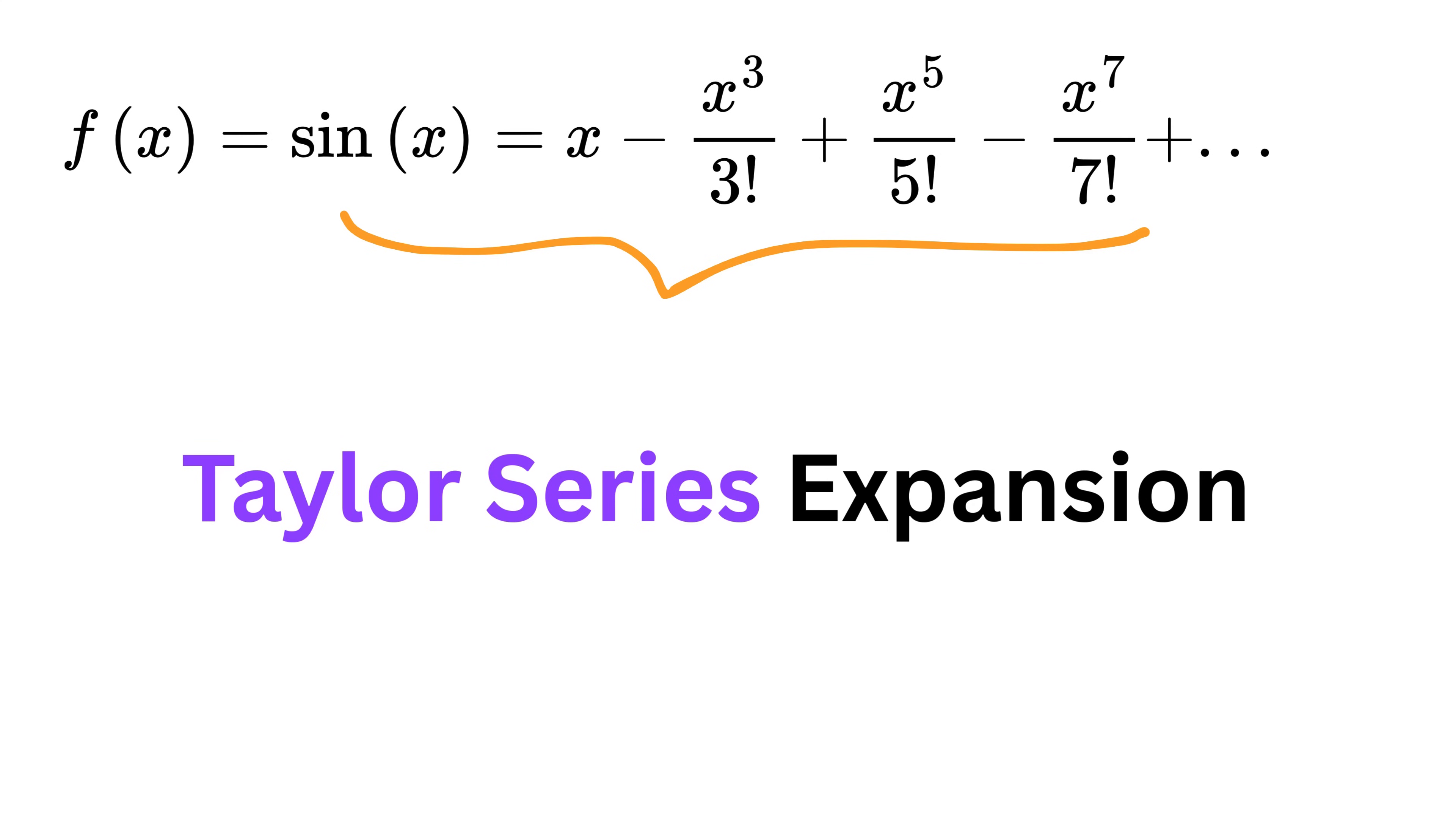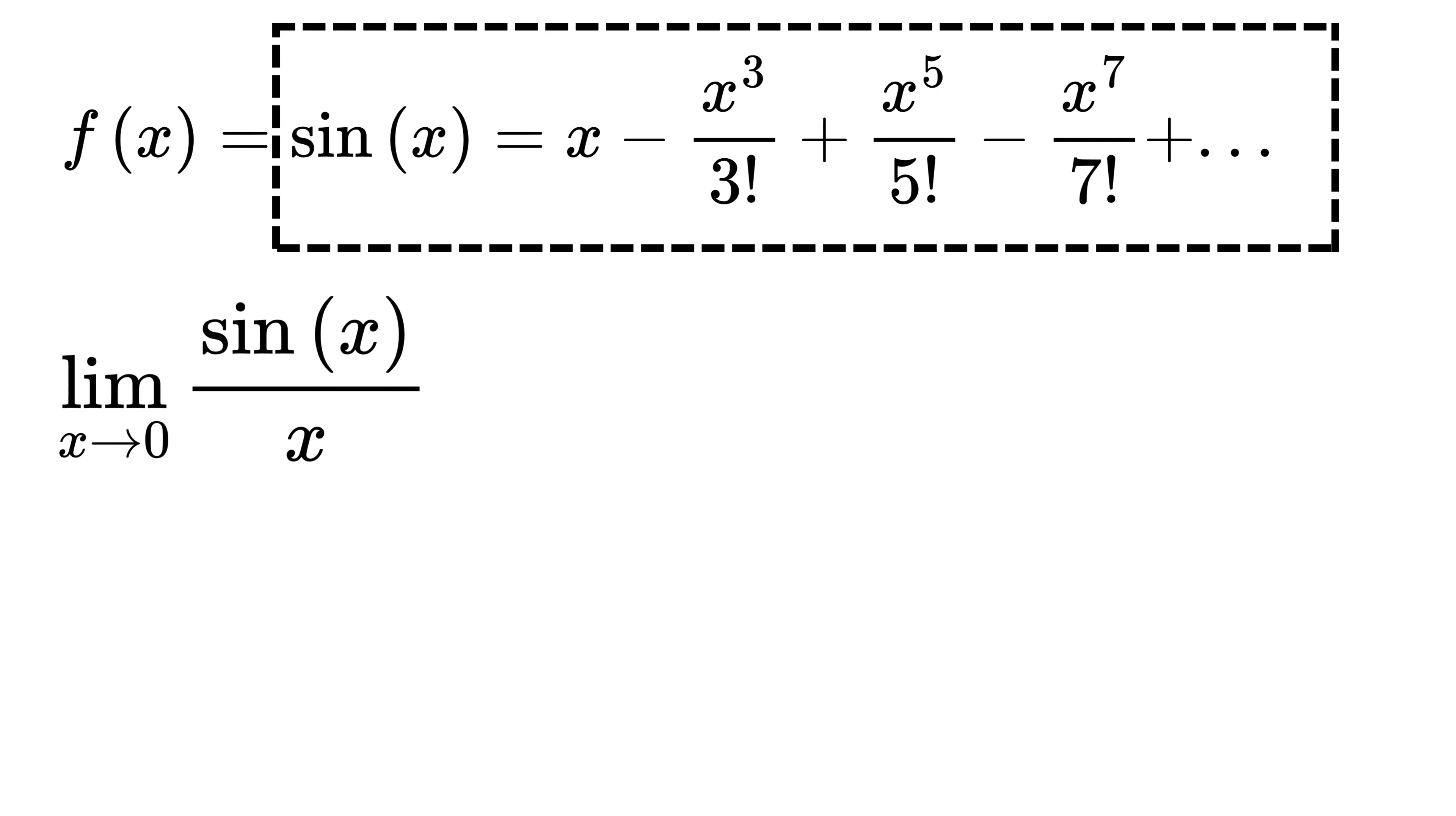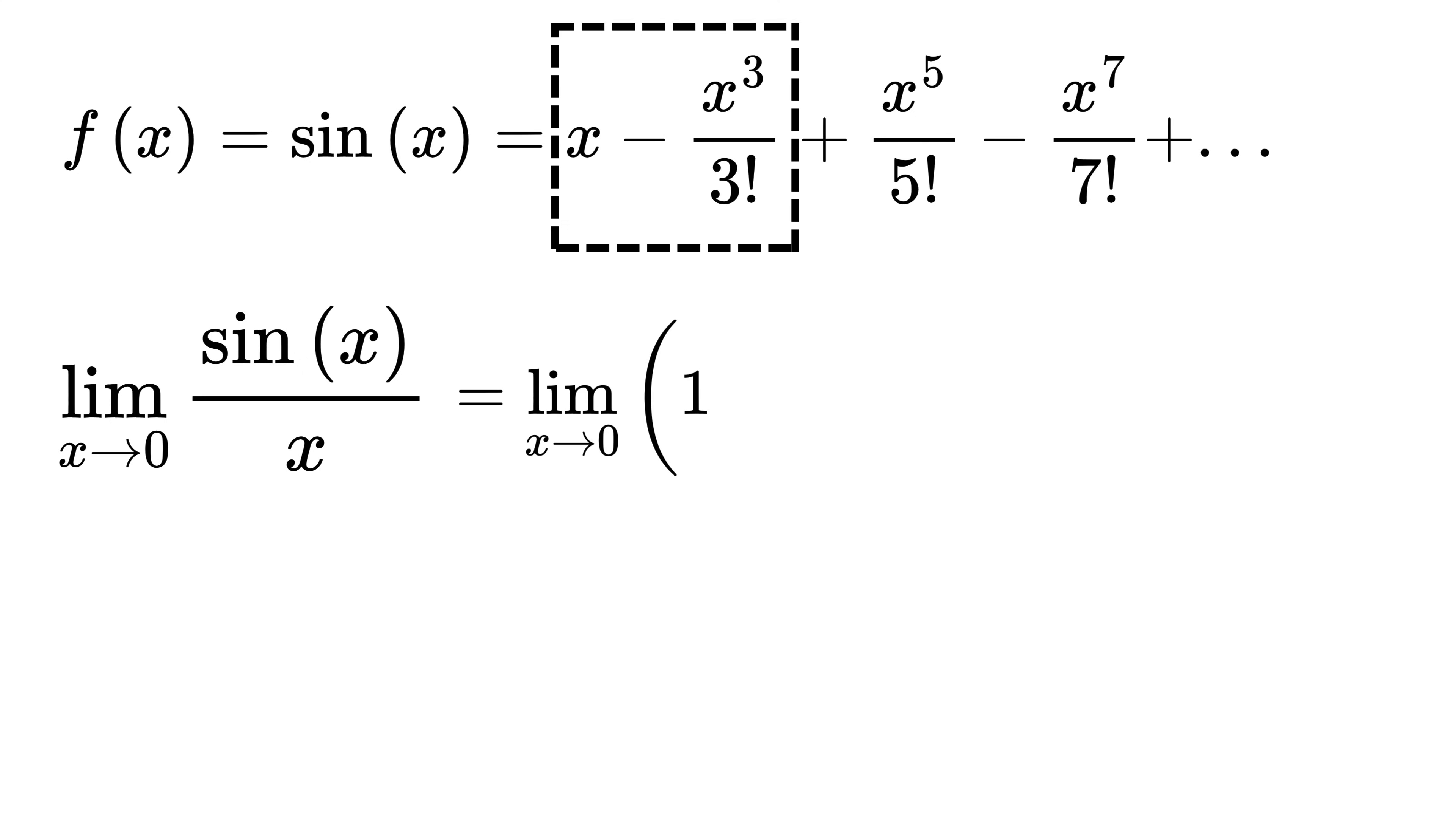Okay, now finally let's go back to our original idea: the limit of sin(x) divided by x as x approaches zero. We now know that sin(x) can be written as this polynomial. If we divide this whole thing by x, what happens?